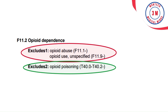Excludes 2: In the same condition of opioid dependence, F11.2 has an Excludes 2 note for opioid poisoning. When a patient becomes poisoned due to high intake of opioid, the opioid poisoning codes must be reported followed by dependence. Therefore, both opioid poisoning and opioid dependence can be coded together.